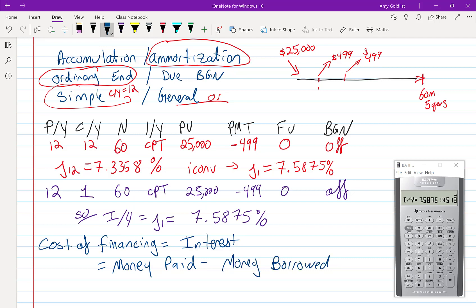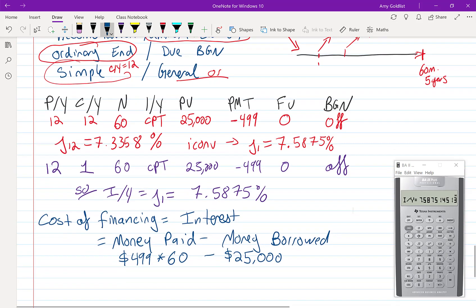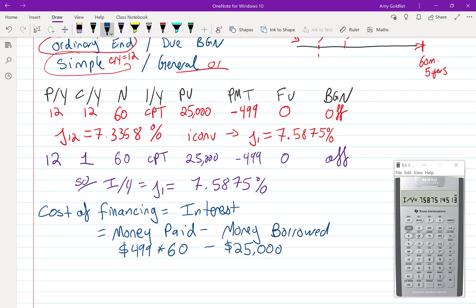So in this case, how much did I pay? Well, we paid $499 60 times and borrowed $25,000. We can throw that into a calculator, which I did off camera, and I ended up with $4,940. That's the cost of financing.